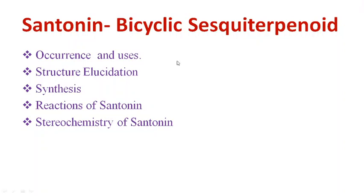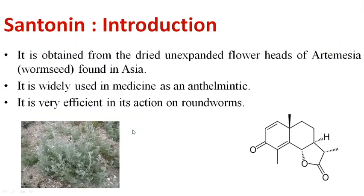Hello and welcome again to the next lecture on terpenoids. Today we will discuss a bicyclic sesquiterpenoid called centonin. We will cover its occurrence and uses, structure elucidation, synthesis, reactions of centonin, and finally the stereochemistry of centonin, which is very important.